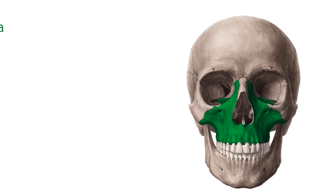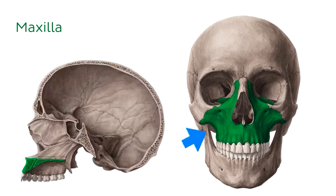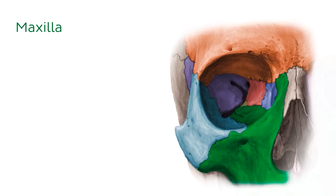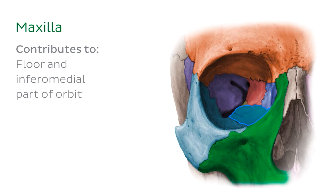Continuing clockwise around the orbit, our next bone of interest is the maxilla. The maxilla is a bilateral or paired bone which makes up much of the anterior facial skeleton and serves many functions, such as holding the roots of the maxillary teeth, forming the hard palate and nasal aperture, in addition to contributing to the floor and the inferomedial part of the orbit.